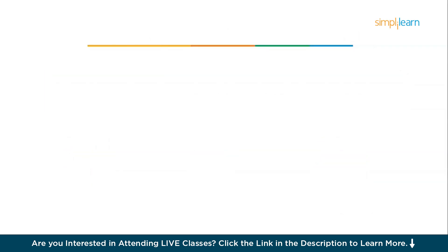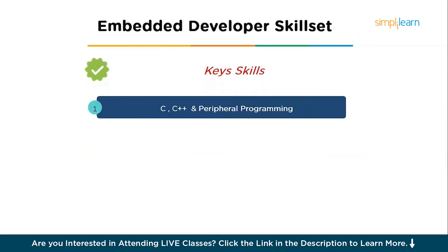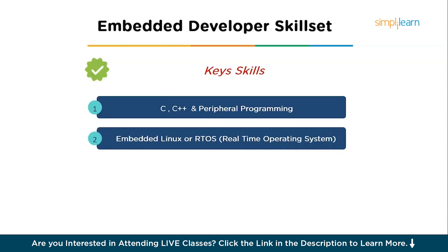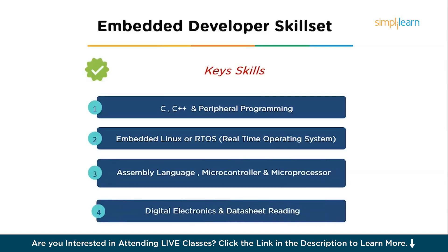Now let's look at the core skills required to become an embedded developer. First, you need a solid understanding of C, C++, and peripheral programming. You should also be aware of embedded Linux and RTOS, as well as assembly language, microcontrollers, and microprocessors. Finally, you need a very solid understanding of digital electronics and datasheet reading.